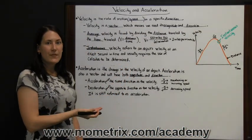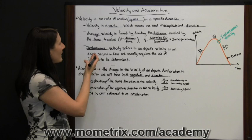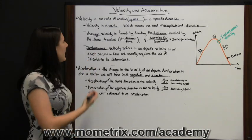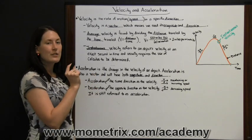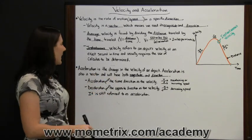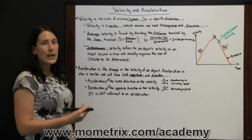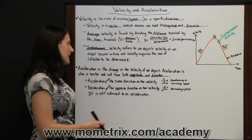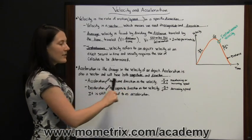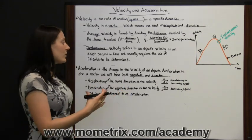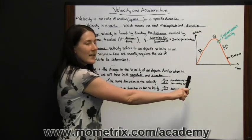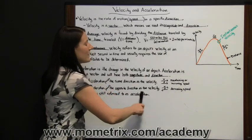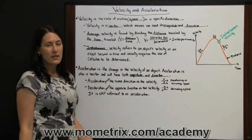Velocity is your rate of speed in a specific direction. Your average velocity is found by dividing the distance you covered over the time it took you to cover it. Instantaneous velocity refers to an object's velocity in an exact moment in time. Acceleration is the change in the velocity of an object, either as it increases or decreases. Because acceleration is also a vector with both a value and a direction, it will face the same direction as your velocity if you are increasing speed, and the opposite direction if you are decreasing speed.